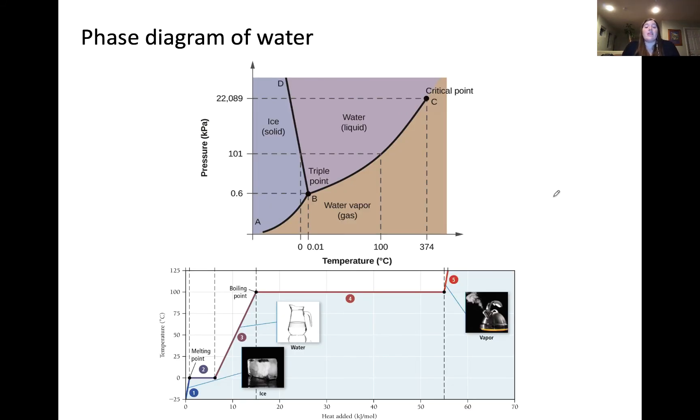Let's look at a phase diagram for water. You'll notice right away that this phase diagram has a different characteristic from the generic diagram I showed on the previous slide. And that's that the slope of the ice-solid and liquid-water interface is negative. The reason for this is because ice is less dense than water. And for reasons we won't get into now, that causes the solid-liquid equilibrium line to have a negative slope.